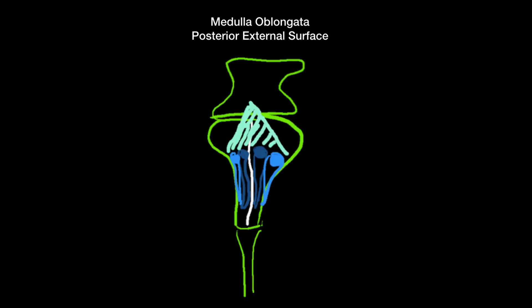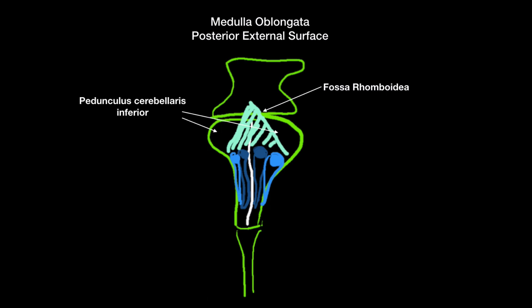Going even more superiorly you're going to find another structure called the fossa rhomboidea, which I'll talk more about later. I also want to highlight these two structures called the pedunculus cerebellaris inferior — these are the peduncles that connect to the cerebellum. If you imagine, the cerebellum is located right behind the medulla oblongata and pons. In this picture we have removed the cerebellum, so these peduncles connect to it. That covers the external surfaces of the medulla oblongata.